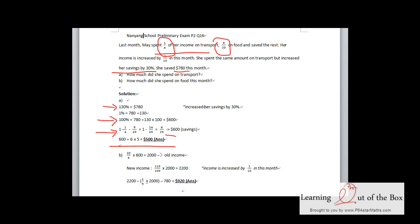For the previous income, since $600 is 6 units, 20 units is $2,000. The new income increased by 10%, so 110/100 times $2,000 equals $2,200.